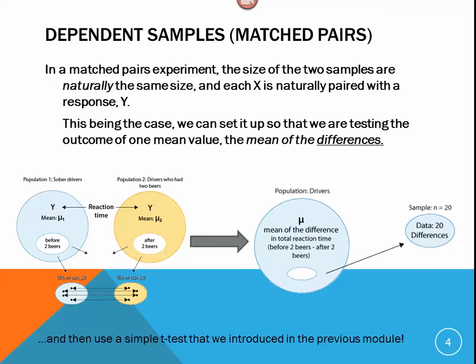In a matched pairs experiment, the size of the two samples are naturally the same size because we're talking about the same group of people, and each x is naturally paired with a response y. This being the case, we can set it up so that we are testing the outcome of a single mean, which we will call the mean of the differences. We take our two groups and the matched pairs that we have in our samples, and we create a third group, which is the difference between these. We take the mean of the difference in reaction time before two beers and after two beers, and then we perform all of our analysis on that one variable, which is the differences between the means. Then we're going to use a simple t-test using our calculators.